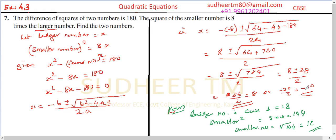If we consider the larger number as minus 10, then the smaller number squared would be 8 times minus 10, which is negative. Since a square cannot be negative, minus 10 is not an acceptable answer. Therefore, the larger number is 18 and the smaller number is 12.